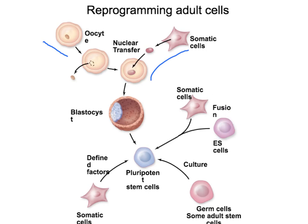When you fuse a somatic cell with a stem cell, the cell becomes pluripotent, but now you have a tetraploid cell — a diploid cell fused with another diploid cell. Another way is to take a culture of germ cells and give them specific transcription factors so they develop into the type of cell you want. There are also new methods that use signals from transcription factors to undo the changes that happen during cell determination, reversing gene expression changes to turn differentiated cells back into pluripotent or even totipotent cells.